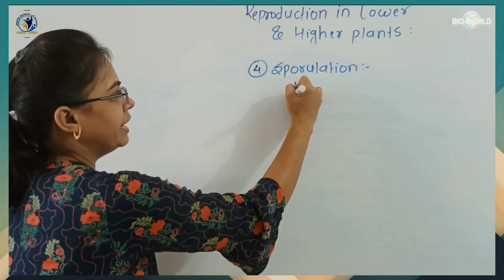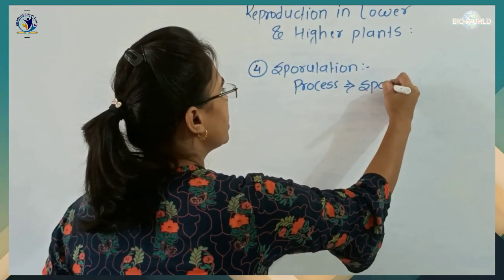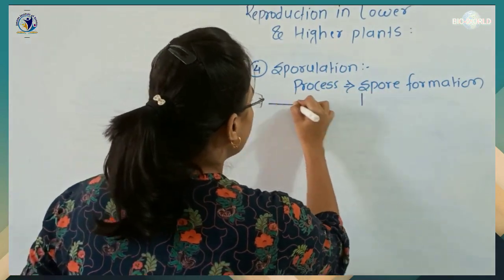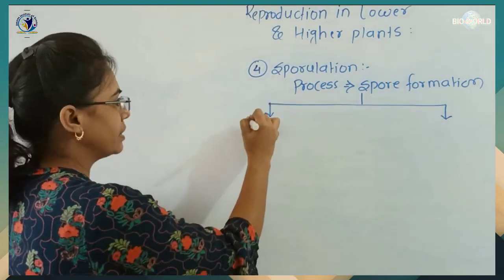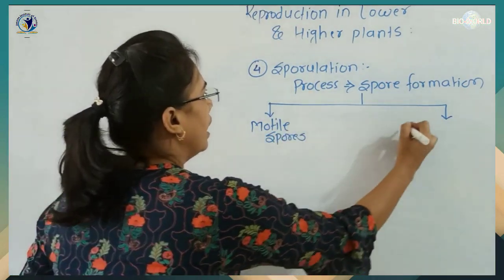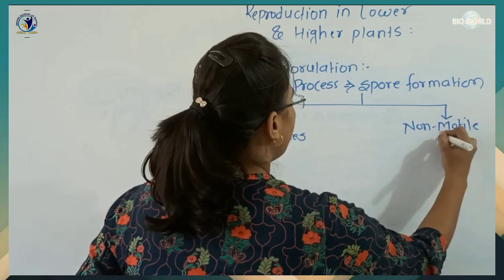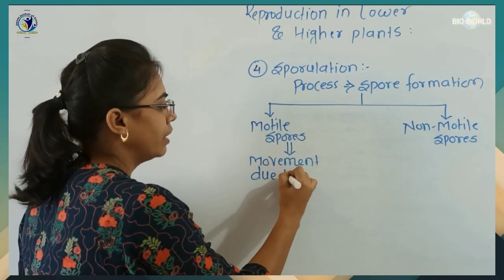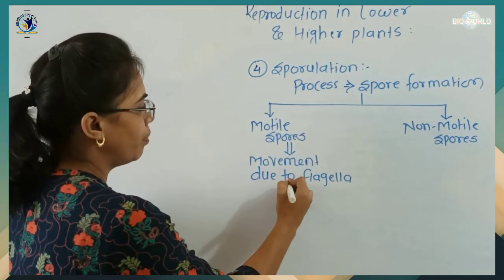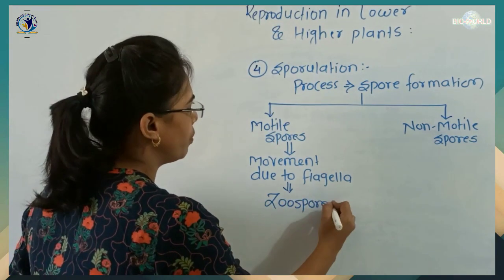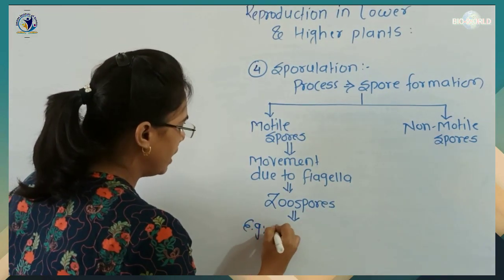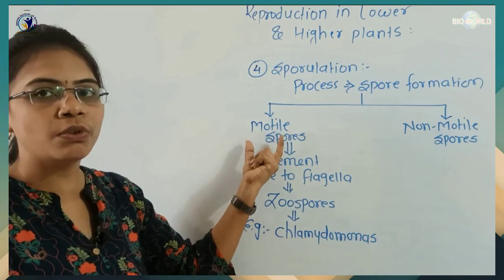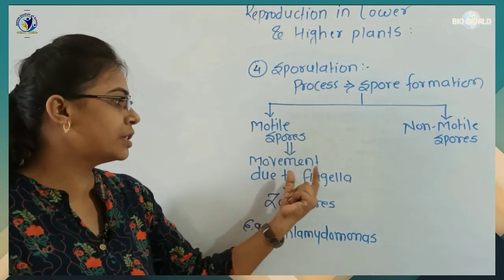The fourth mode of asexual reproduction is sporulation — the process of formation of spores. Spores are mainly categorized into two types: motile spores and non-motile spores. Motile spores show movement due to the presence of a locomotory organ — the flagella — and these motile spores are called zoospores. The example is Chlamydomonas, a type of algae which shows the formation of motile spores called zoospores, and this movement is due to the presence of flagella.